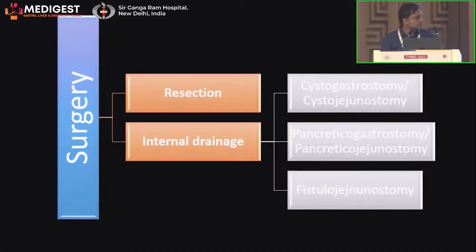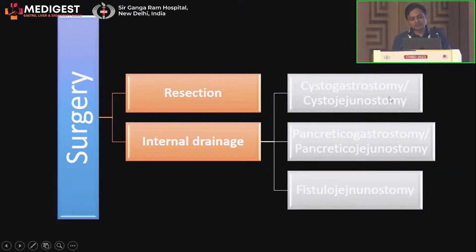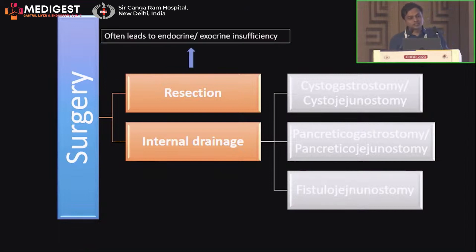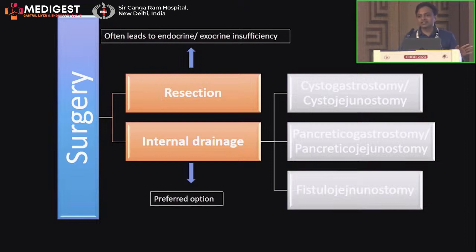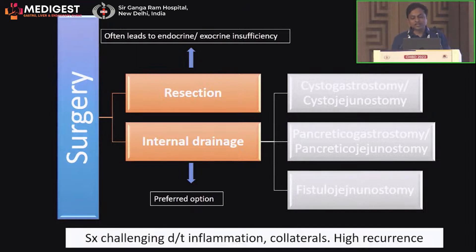Surgical options are either resection or internal drainage. Internal drainage options include cystogastrostomy, cystojejunostomy, pancreaticogastrostomy, pancreaticojejunostomy, or fistulojejunostomy. Resection often leads to endocrine or exocrine insufficiency since you are already dealing with necrotic pancreatic tissue, making internal drainage the preferred surgical choice. Surgery is challenging due to ongoing inflammation, presence of collaterals from splenic vein thrombosis, and a high recurrence rate after surgical internal drainage.